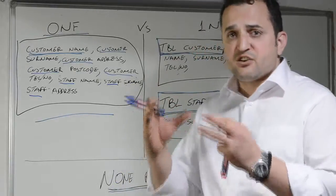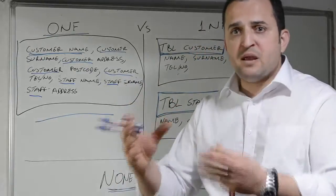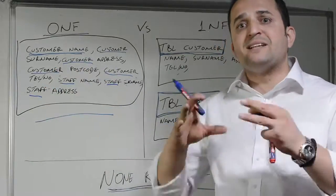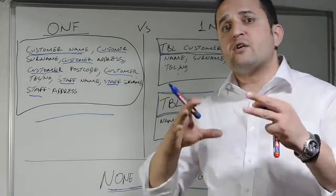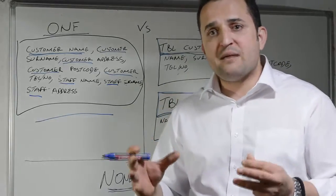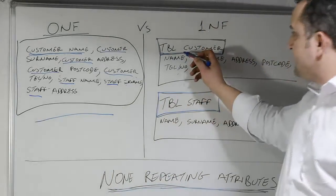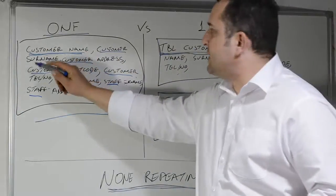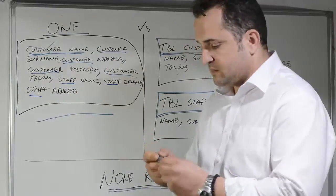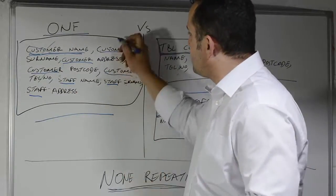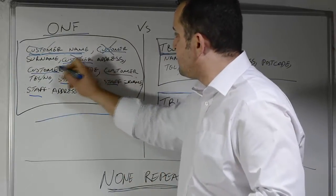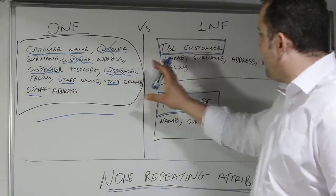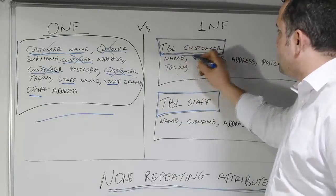It's as if that repeated attribute is crying out loud: 'Pick me up, I don't belong in this mess, put me into my own entity, put me into my own table, and my table is called customer.' So therefore, we remove the word 'customer' and we put a label — tbl_customer.